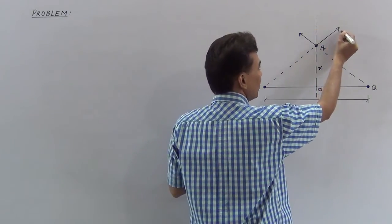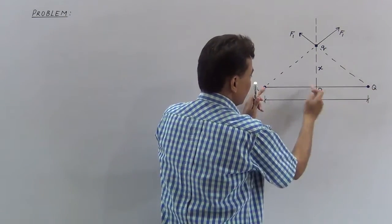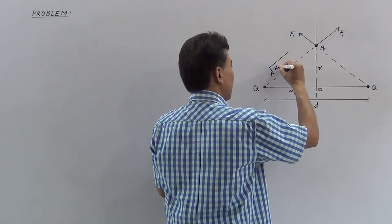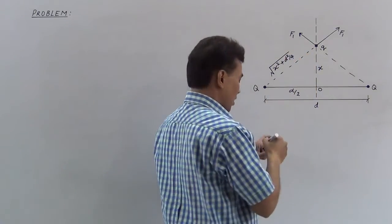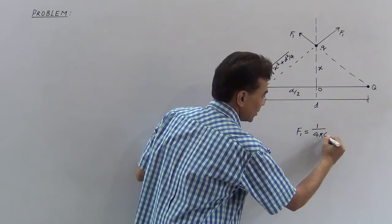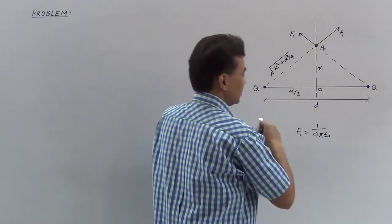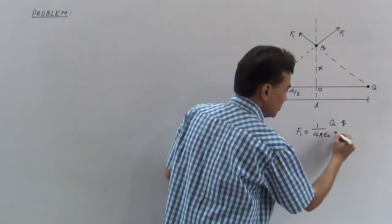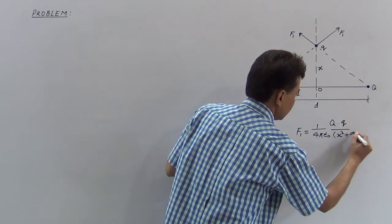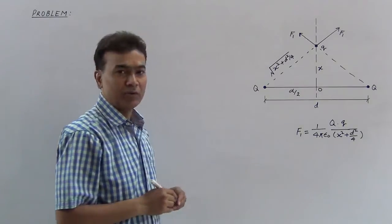For this value of F1: the total separation is d, so half the separation is d/2. The distance from each charge Q to the position of q is the hypotenuse: root of (x² + d²/4). The force F1 is equal to (1/4πε₀) × Q × q divided by (x² + d²/4).